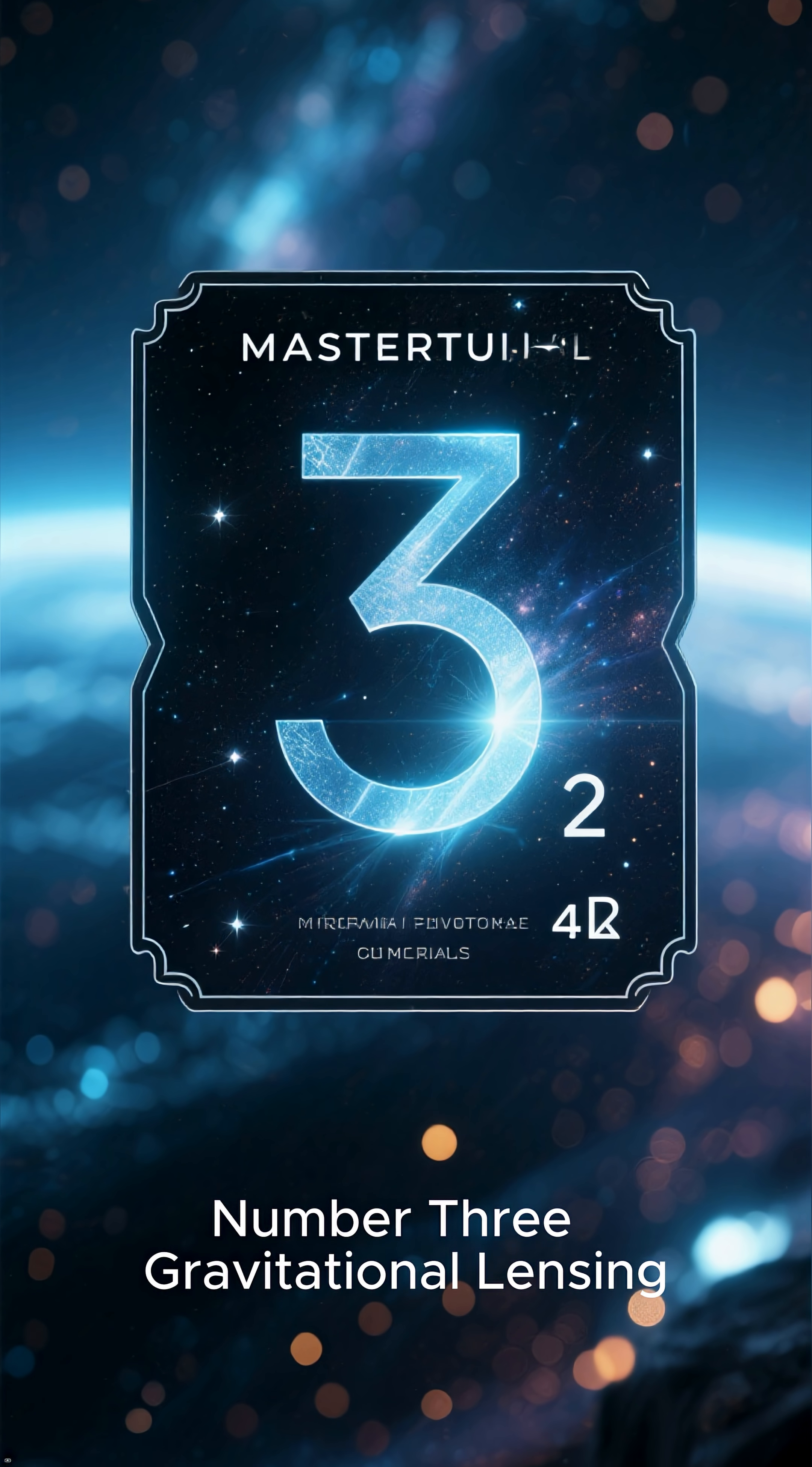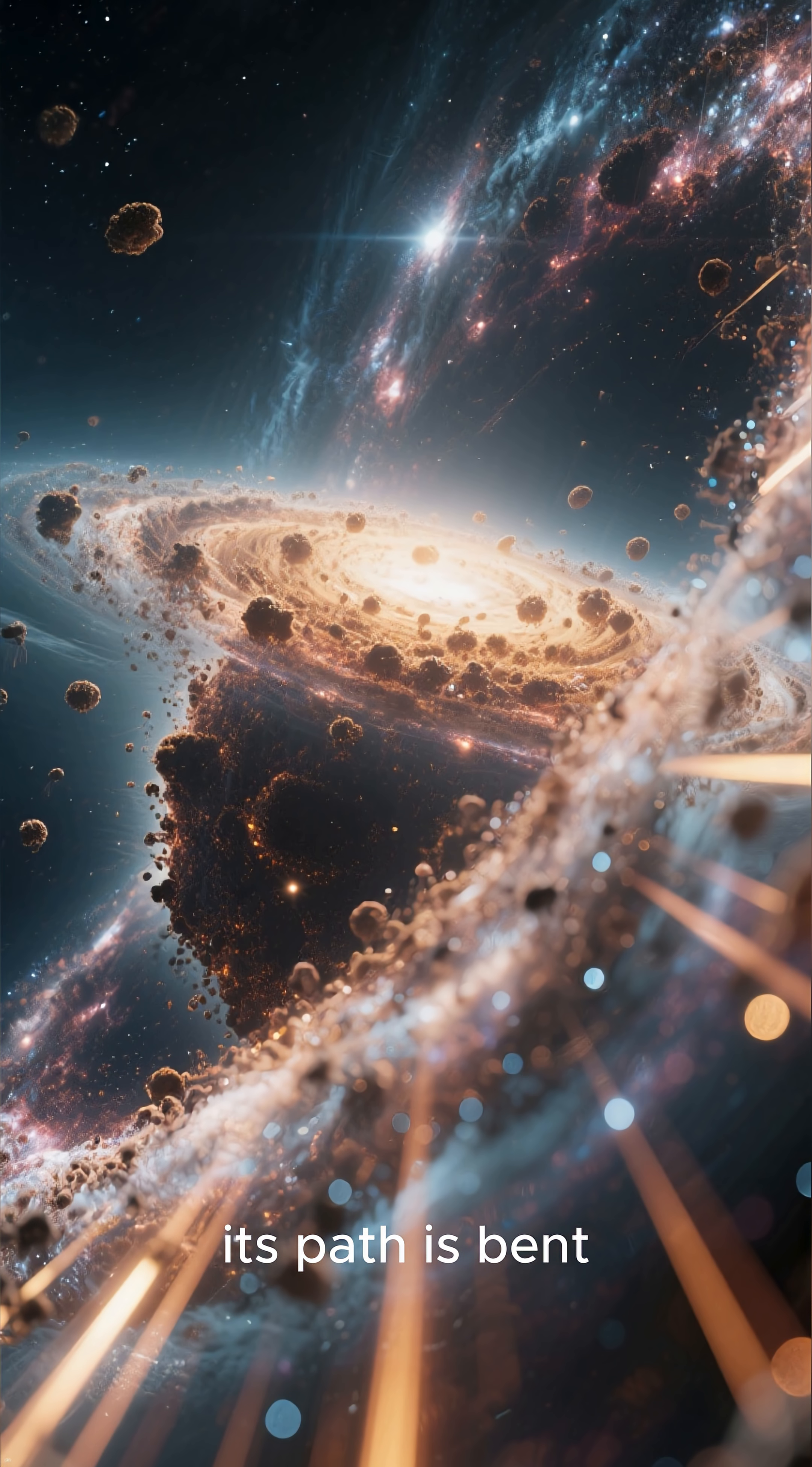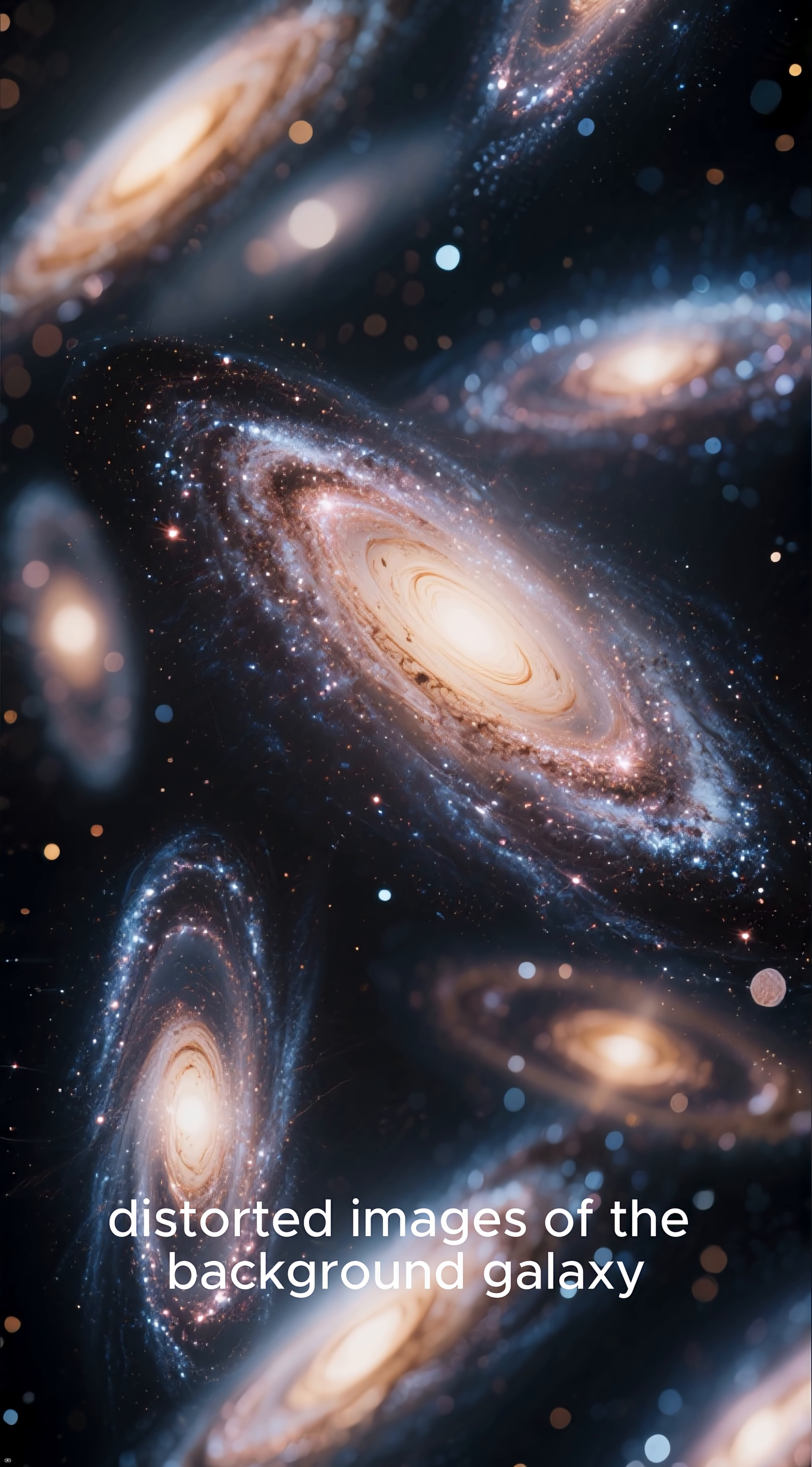Number 3. Gravitational Lensing. When light from a distant galaxy passes near a massive object, like a galaxy cluster, its path is bent, just as light is bent by a glass lens. This gravitational lensing can create multiple, distorted images of the background galaxy,